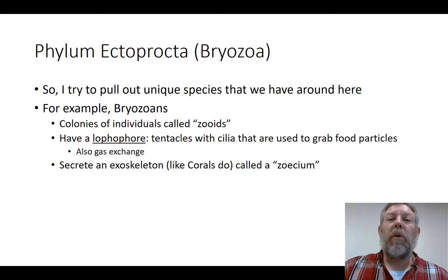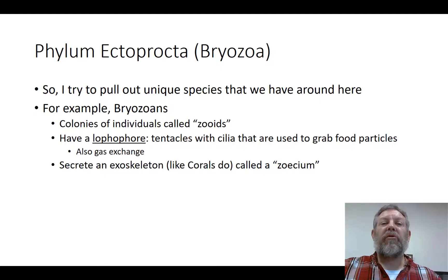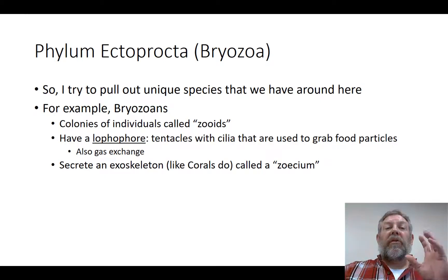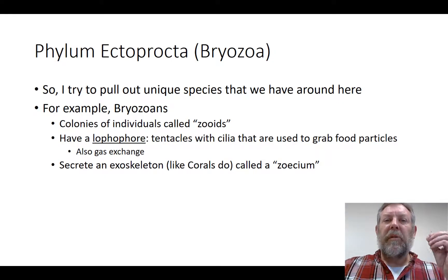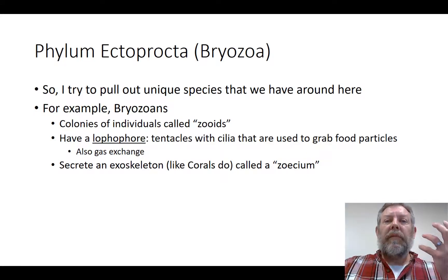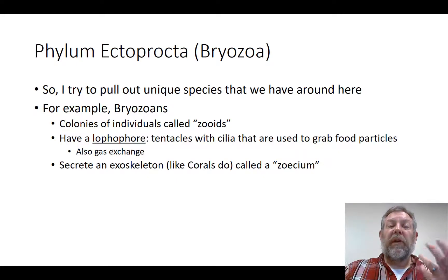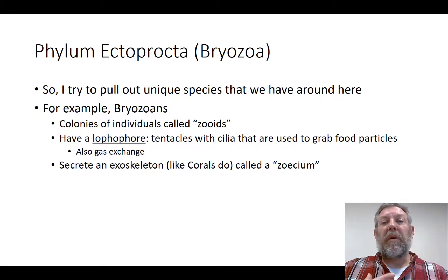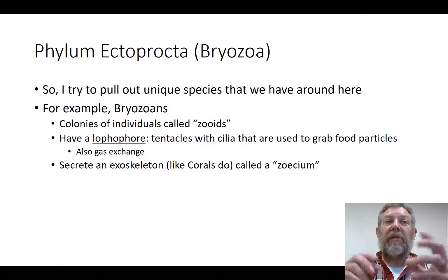For example, the Portuguese man-of-war was a colonial organism that had a bunch of multicellular individuals that lived together. These individuals have a structure called a lophophore, and that's the important structure to bryozoans. The lophophore has tentacles with cilia on it, so it's very similar to the hydra we looked at, but it doesn't have the stinging threads. These tentacles are used for feeding — they filter feed and grab food particles out of the water — but they're also used for gas exchange.